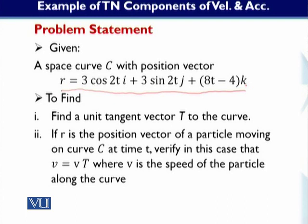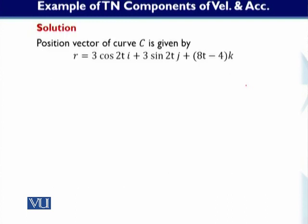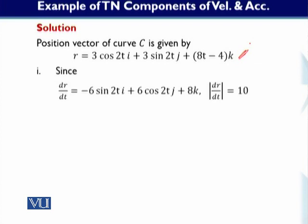The solution for part one begins with the given position vector. To find the tangential and normal components of velocity, we take the derivative. So dr/dt is equal to: the derivative of 3cos(2t) gives minus 6sin(2t)i, the derivative of 3sin(2t) gives 6cos(2t)j, and finally the derivative of (8t minus 4) gives 8k.